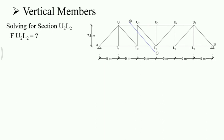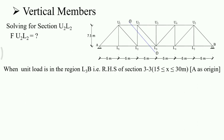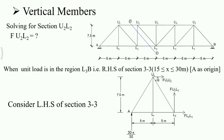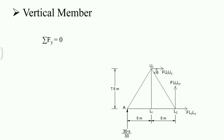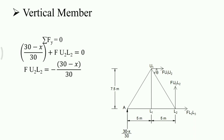Similarly, we will keep the unit load on the right-hand side of section 3-3, that is L3 to B. The limits are 15 m to 30 m. For simplicity, we will consider the left-hand side of section 3-3. Summation of Fy = 0: (30 − x)/30 is going vertically upward and F(U2L2) is also going vertically upward. So F(U2L2) = −(30 − x)/30. At x = 15, the ordinate is −0.5; at x = 30, the ordinate is 0.